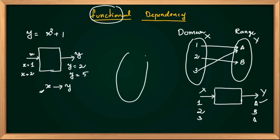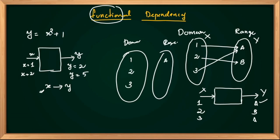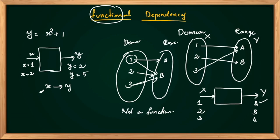For example, you have a mapping — this is the domain, this is the range. If 1 maps to A and also 1 maps to B, and 2 maps to B and 3 maps to B, this is not a function. It is not a function because a single element in the domain must have exactly one outgoing edge. Each element in the domain must map to exactly one element in the range.